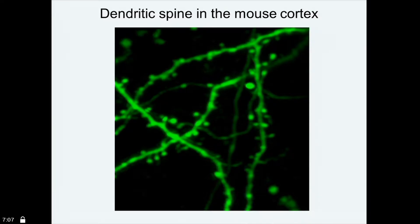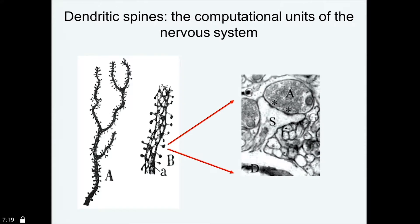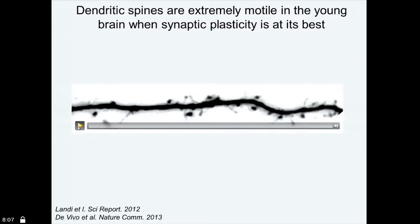Dendritic spines are very much of interest for us. They are these little spines that stick out from neurons, and they suddenly became extremely important in the 1950s when by electron microscopy it was demonstrated that basically each one of them carries a synapse. So each dendritic spine is really the computational unit of the brain, if you wish. A very important fact about learning, memory, and the development of brain circuitry is that these structures are extremely plastic — they change shape, they are continuously formed and continuously retracted — and this plastic process is very much related to the establishment of circuitry and with memory and learning.